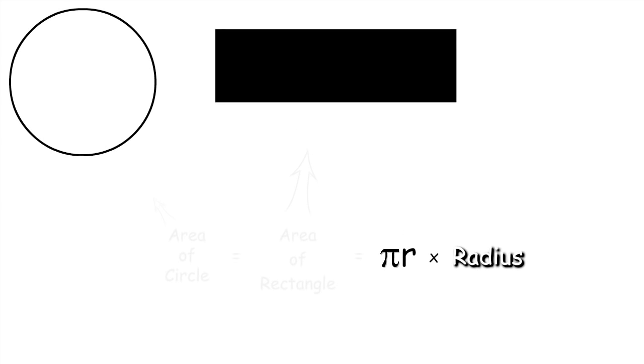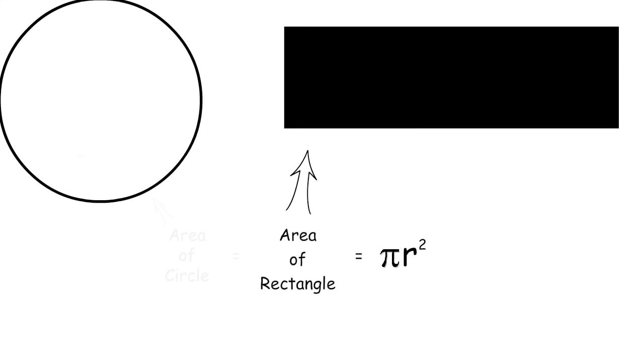So now base times height becomes pi r times r. Combine the r's together and we have pi r squared, which is equal to the area of the rectangle, which is equal to the area of the circle.